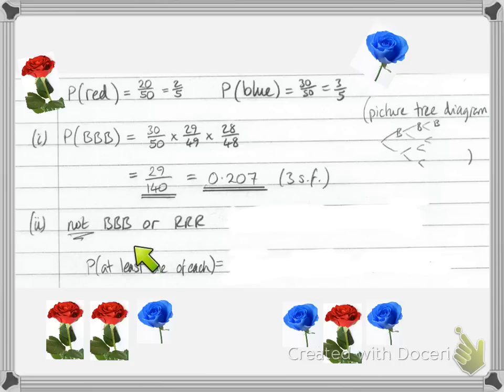In fact, it's going to be much easier to look at what we're not interested in. If we do 1 minus the things we're not interested in, it'll be a quicker calculation. So we don't want blue, blue, blue. And we don't want red, red, red. We already know the probability of three blues from before. So it's going to be 1 minus. And then it will be this value. Or, so we'll plus.